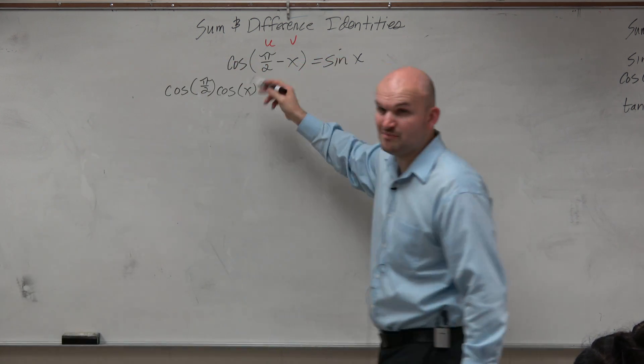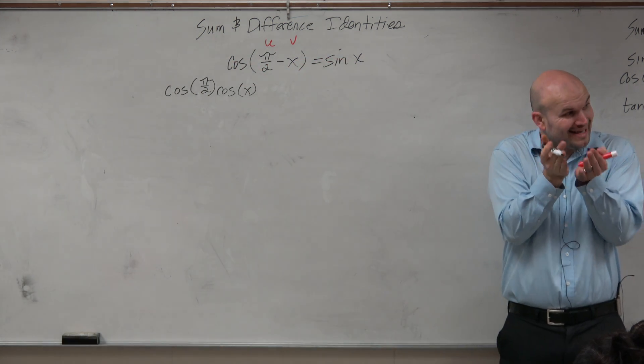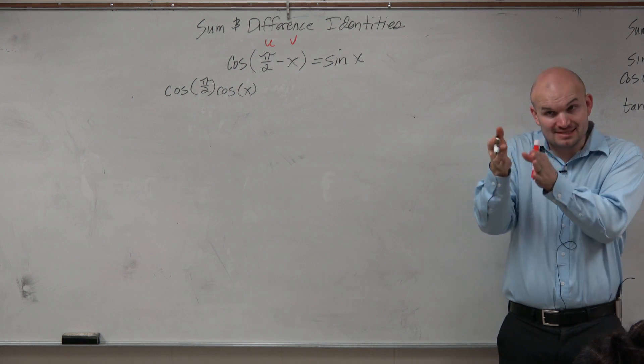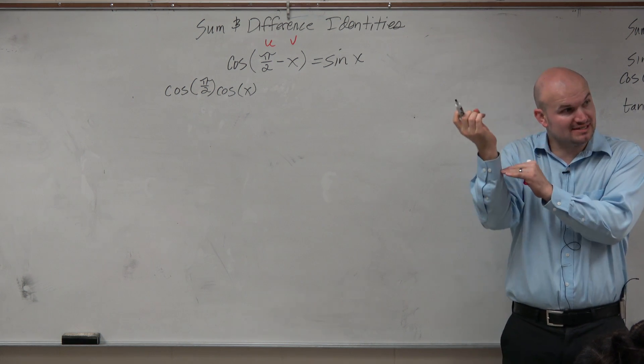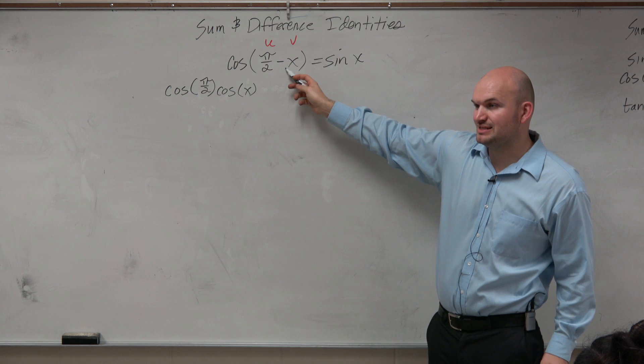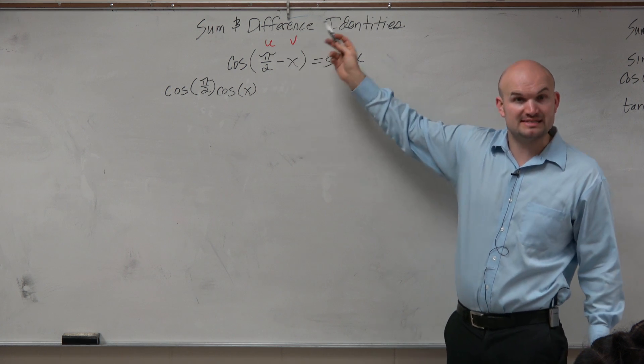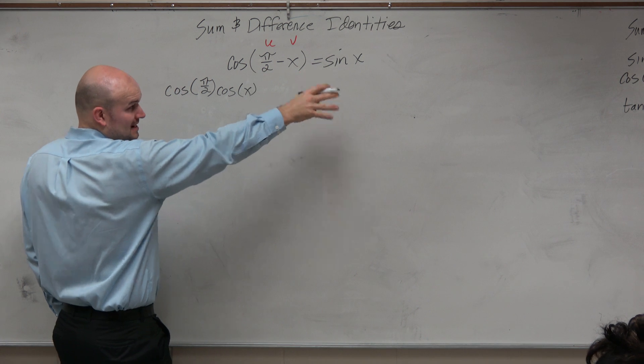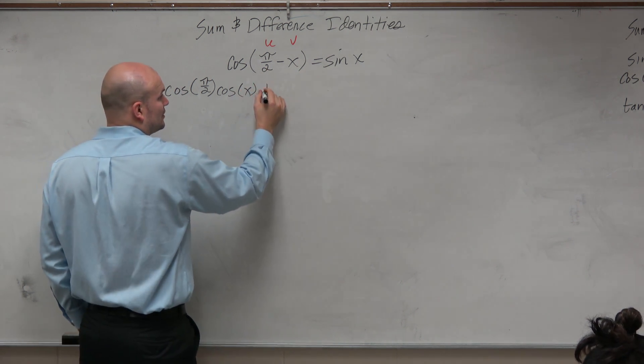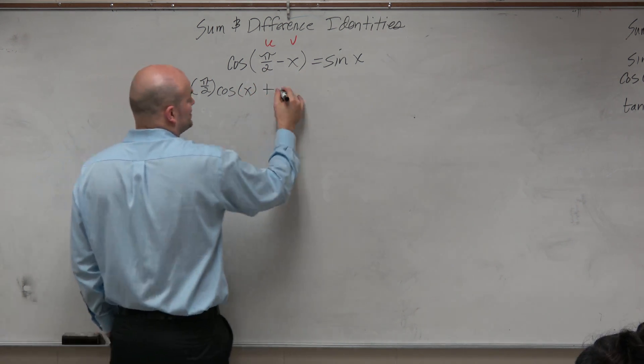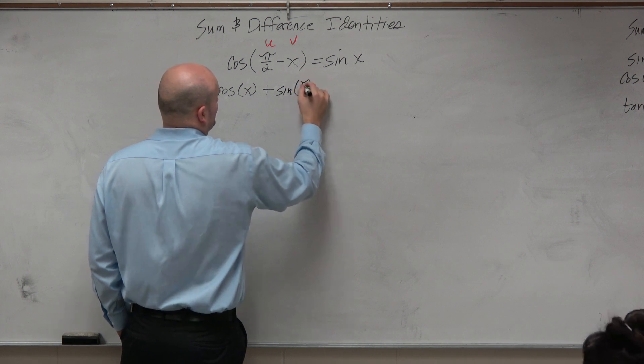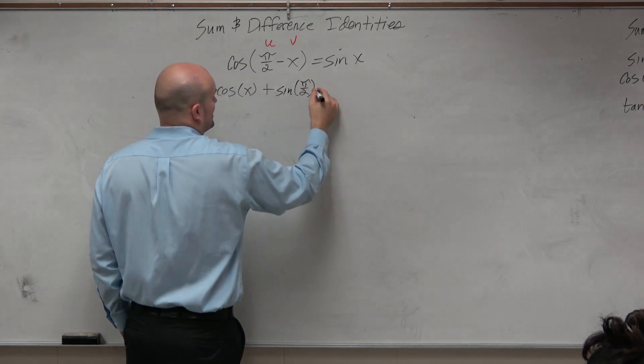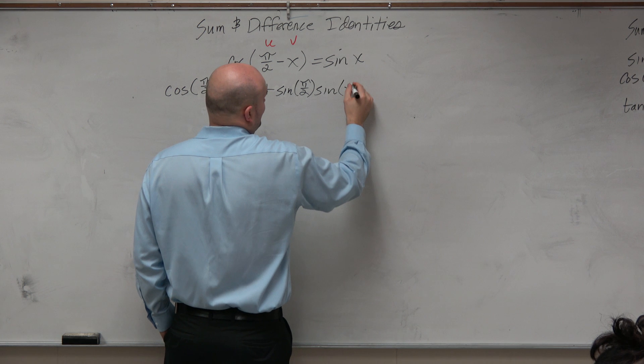So u is an entity by itself. The minus is an entity by itself. And then the v is an entity by itself. So therefore, this isn't negative x. It's u minus v. And then we have to use the opposite sign. So if this is subtract, therefore, we're going to add. And now this is going to be the sine of pi halves times the sine of x.